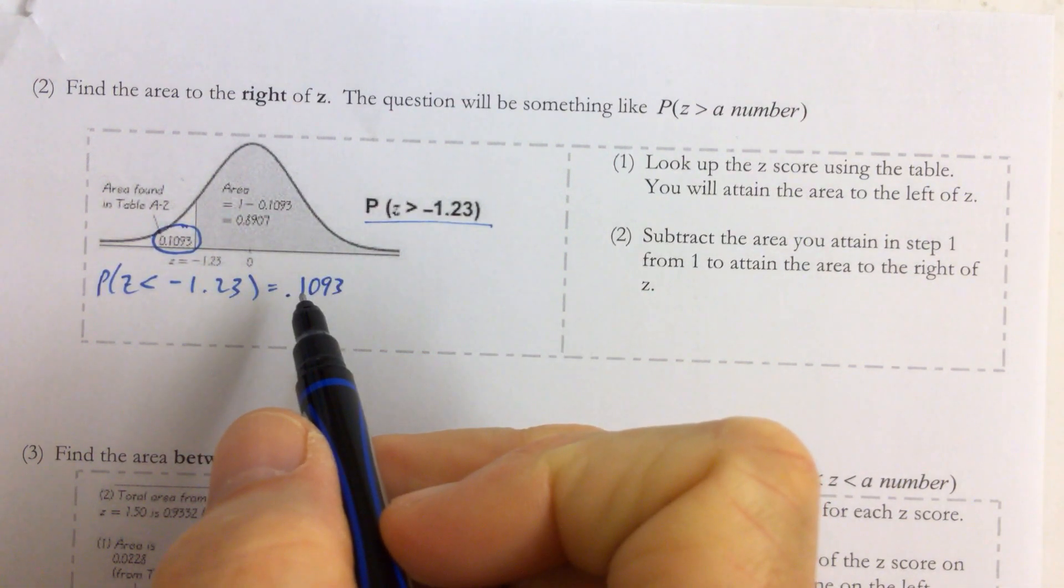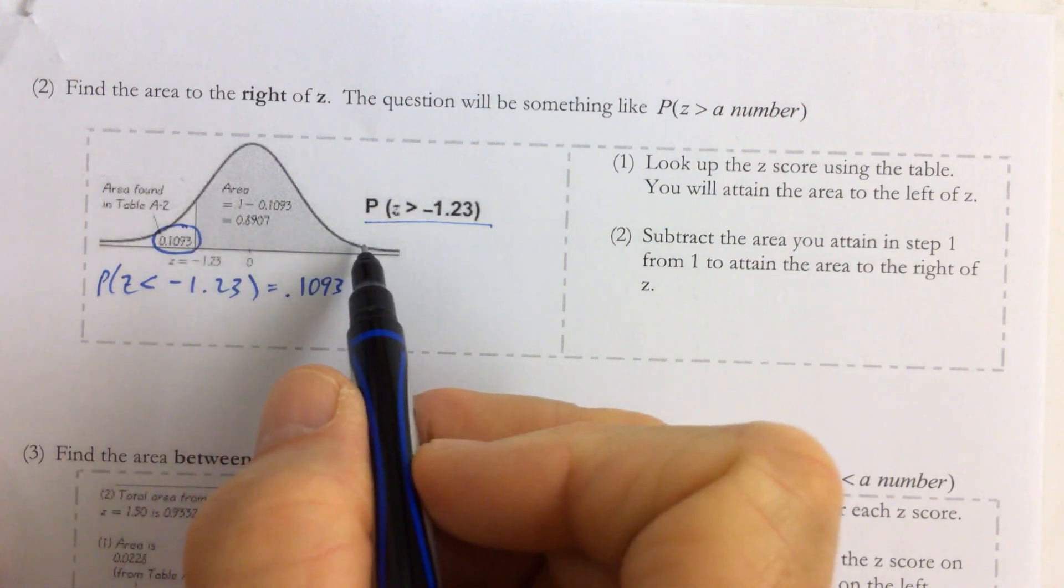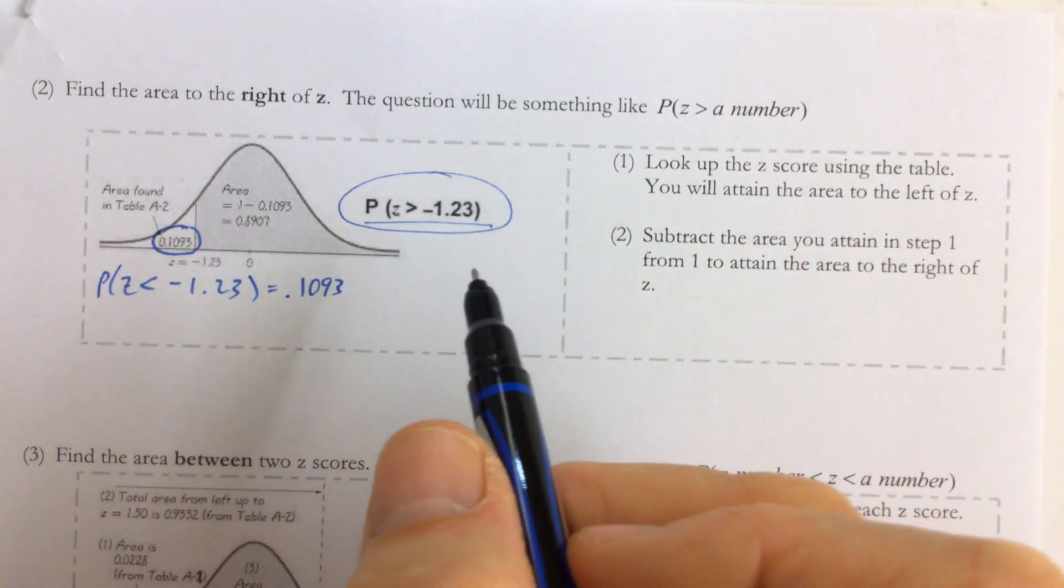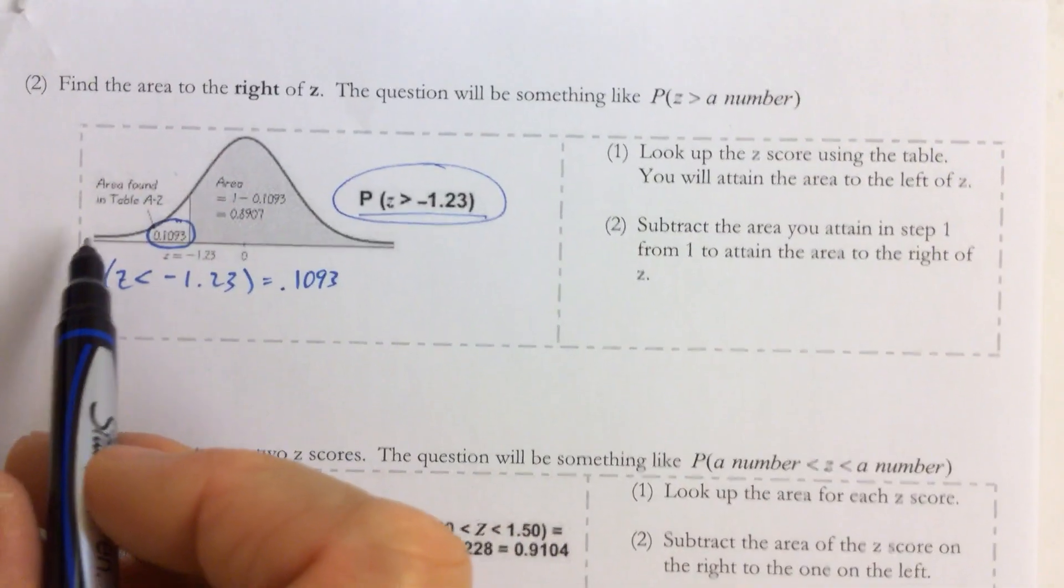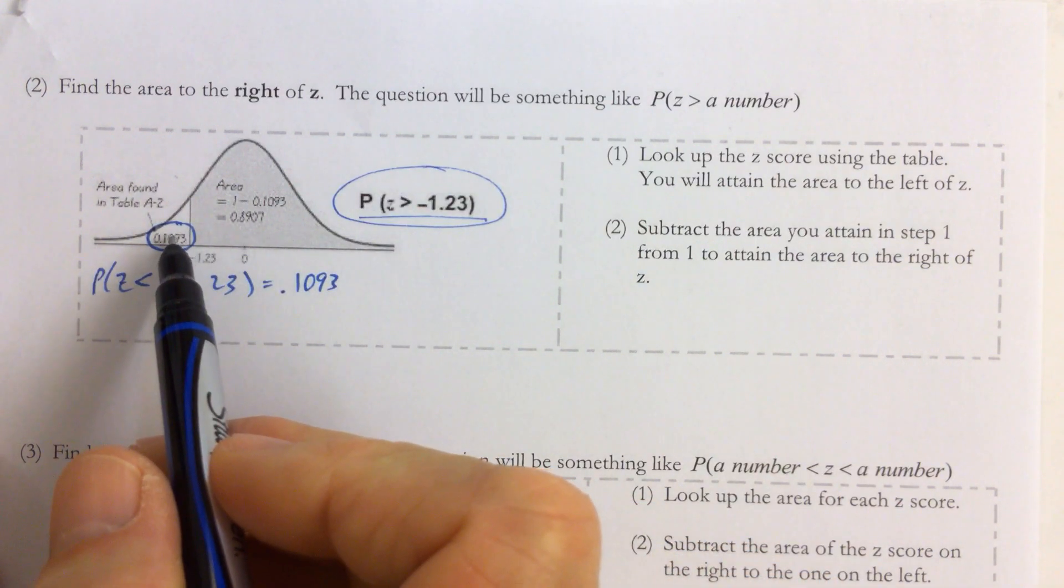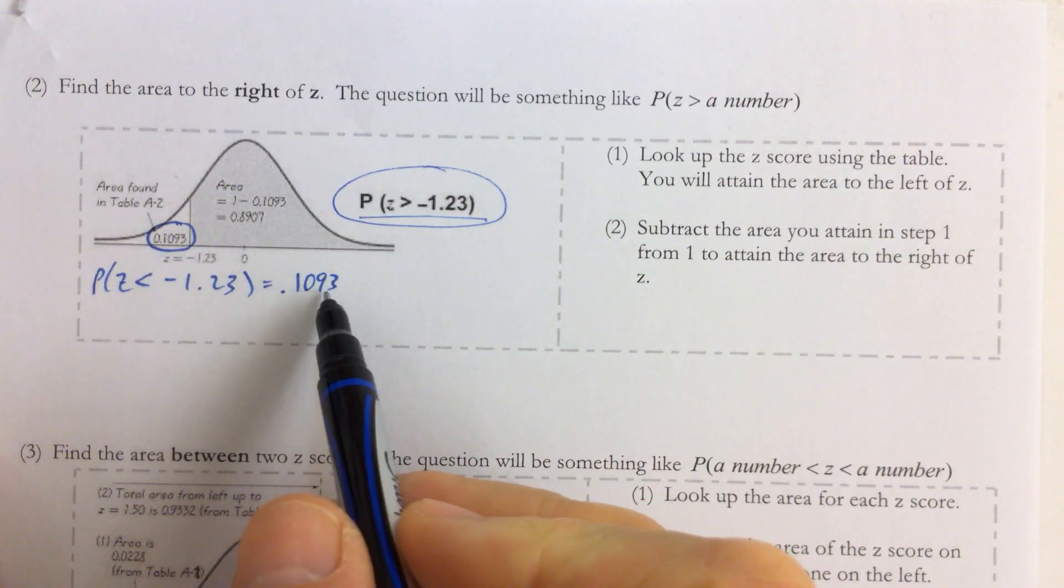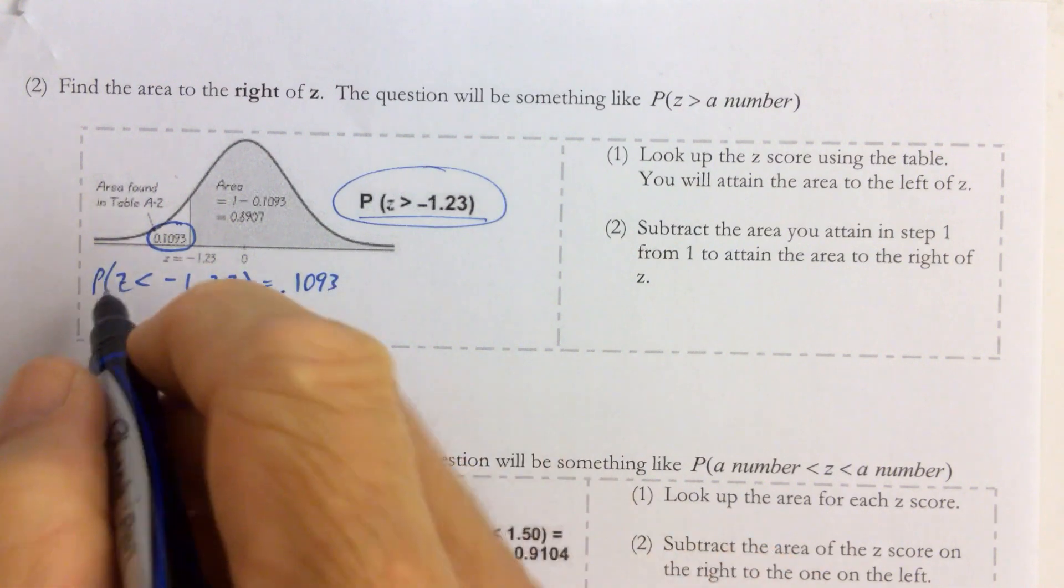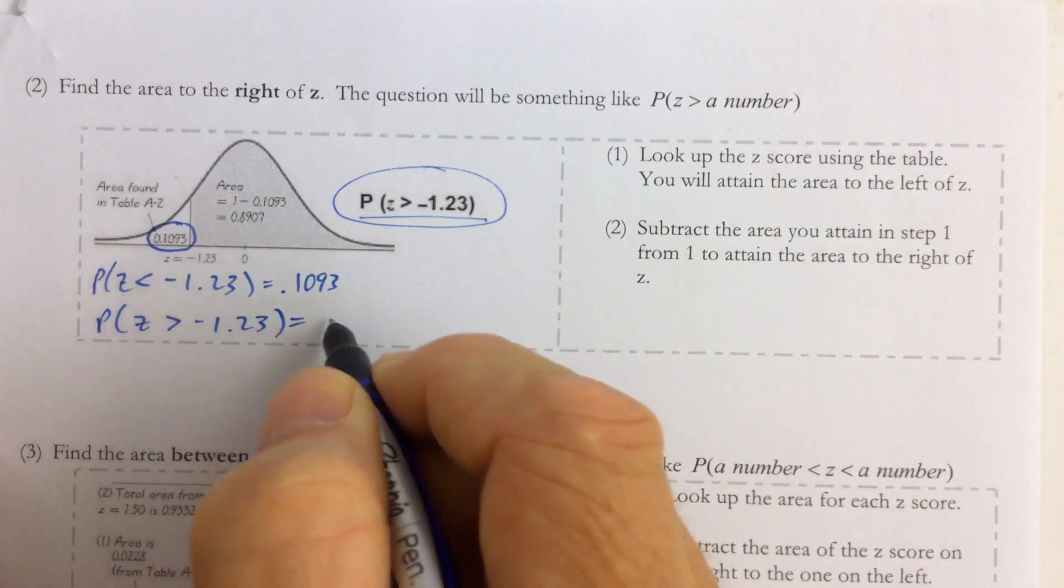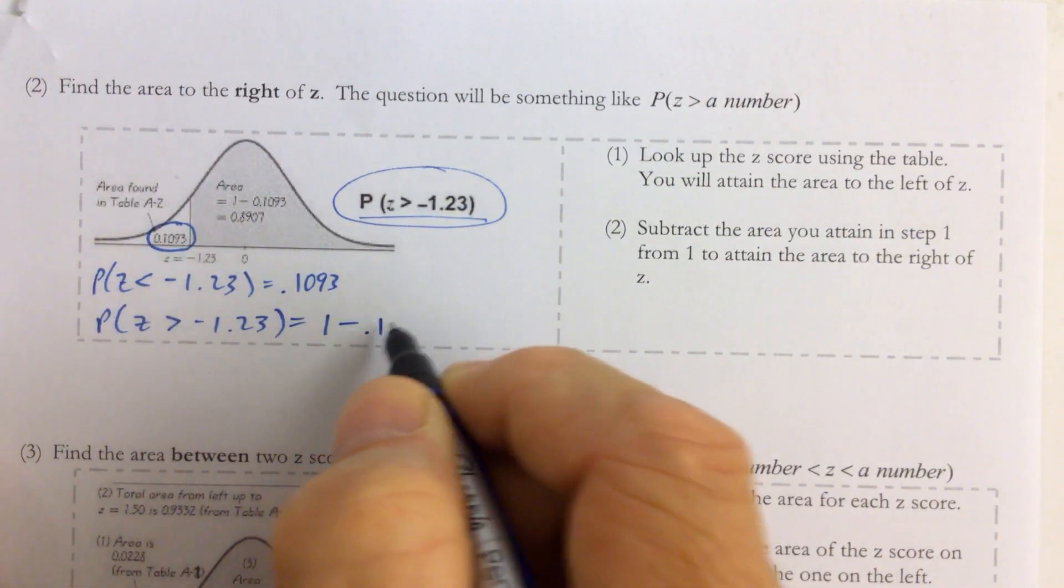Now, what we again need to understand is that the area to the right of that answers this probability question. So think about it. If the total area under the curve is 1, and you found the area of the blank region, which is 0.1093, then the probability that z is greater than negative 1.23 would have to be 1 minus the blank region.